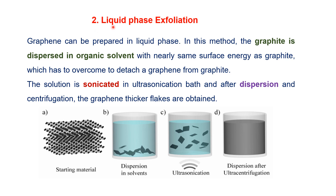The second exfoliation method is liquid phase exfoliation, where graphene is obtained in the liquid phase. Graphite is dispersed in organic solvents, and the surface energy of the solvent is sufficient to break the van der Waals forces between the graphite layers. The mixture is then sonicated in an ultrasonication bath, and single layer graphene dispersed in the liquid phase is produced.